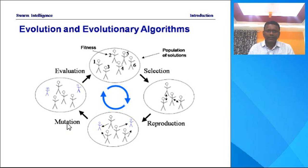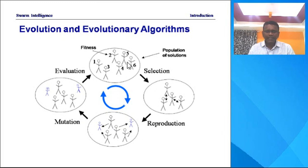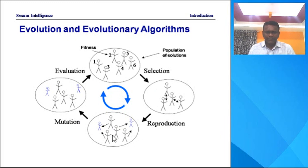Selection has different methods, crossover has different methods, and mutation also has different methods. These stages are continued until we apply the stopping conditions.